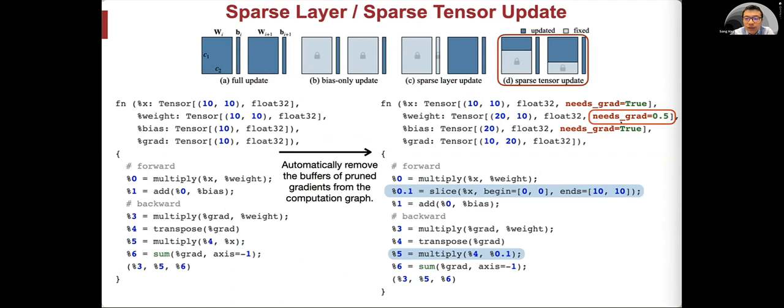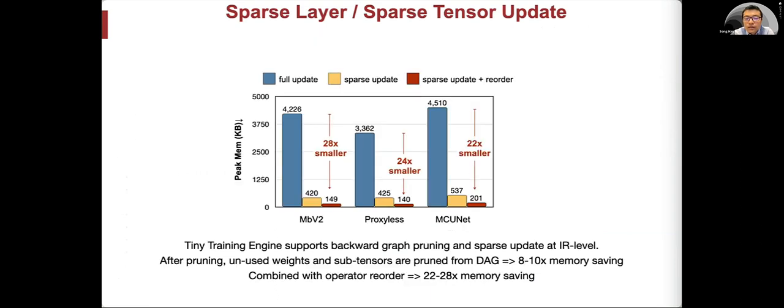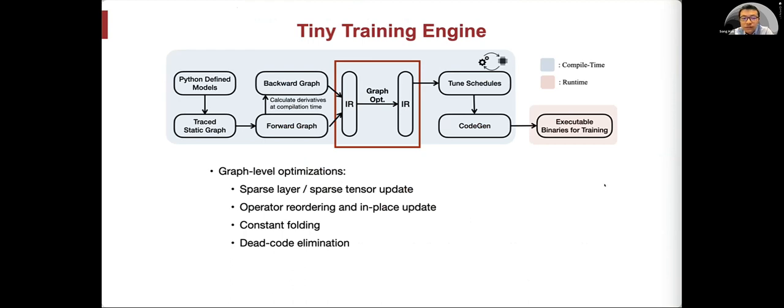For sparse layer sparse tensor update, we tell, for example, for this layer we need to update only half of the weights. Therefore, we give needsGrad to be only 0.5. So TTE automatically removes the buffers of the pruned gradient from the computational graph. For example, here we inserted a new line of code to slice the input activation to be only half of the original tensor size. Then we multiply with the trimmed tensor to realize the real memory saving. The whole pipeline is automated, and we can achieve up to 28x memory saving compared with full update. Tiny Training Engine supports backward graph pruning and sparse update at the IR level. After pruning, those unused weights and tensors are pruned from the DAG, which resulted in about 8 to 10x memory saving, and combined with operator reordering, that's 22 to 28x memory saving.